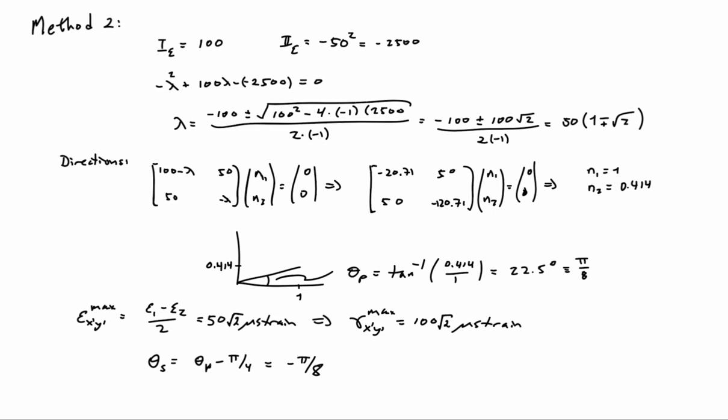If I now want to determine the maximum shear strain and the maximum shear angle, what I can do is I can simply take the difference of the two principal strains and divide by 2, and that will give me the maximum tensorial shear strain. And that then gives me, as we can see again, 50 times root 2 microstrain. And if I multiply that by 2, I get the maximum engineering shear strain of 100 root 2 microstrain.